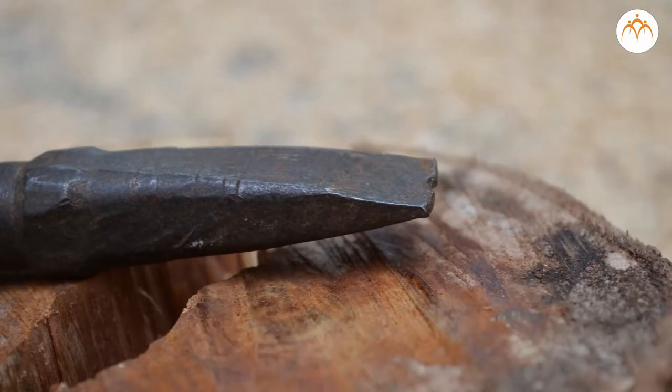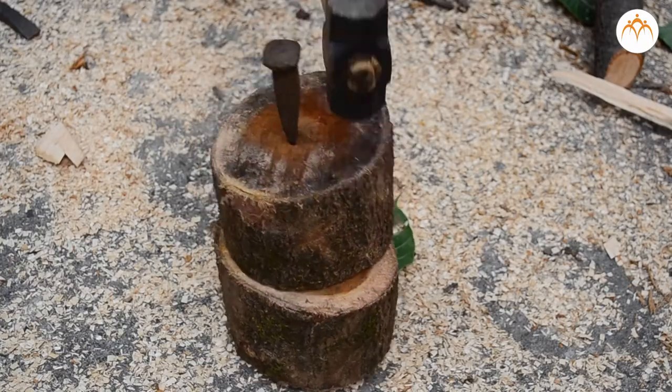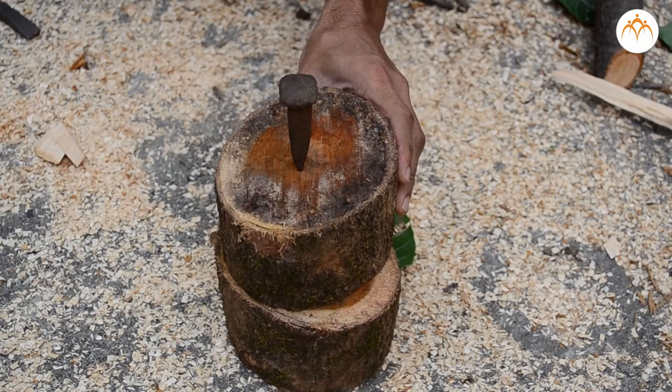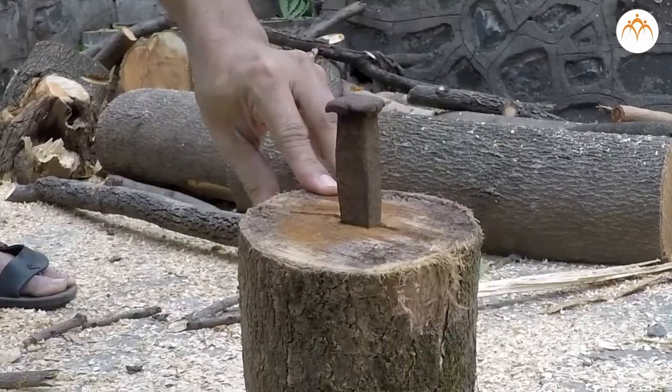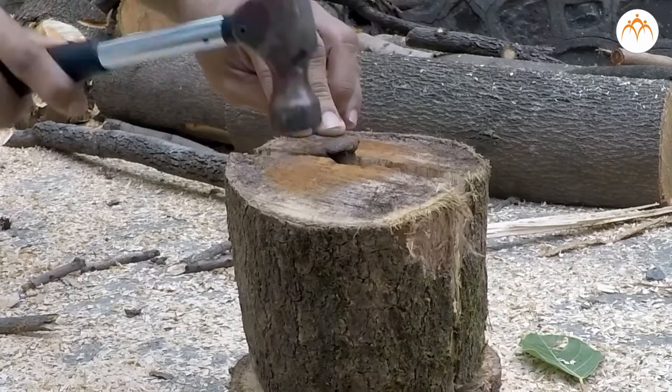This is an iron wedge shaped like a triangle. The thinnest or narrowest end of the wedge is used to split a log as well as a rock. Force is applied at the widest end of the wedge, usually with a large hammer.